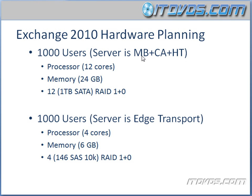The first server is going to have our mailbox server role, our client access server role, and our hub transport server role. The second server is going to be our edge transport server.